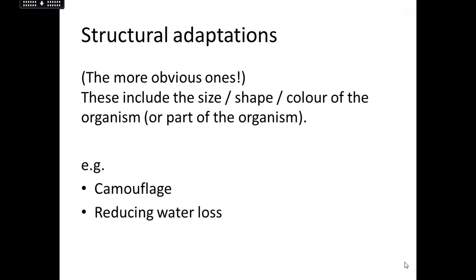The ones you mainly need to know about are structural adaptations — luckily, they are the more obvious ones. When we think about the adaptations of an animal or plant, we normally think about the size, shape, or colour of the organism, or sometimes just a part of it. For example, the biggest one that nearly always comes up is camouflage. Most animals are really well camouflaged for their environment so they can be effective predators, or as prey, they can escape their predators.